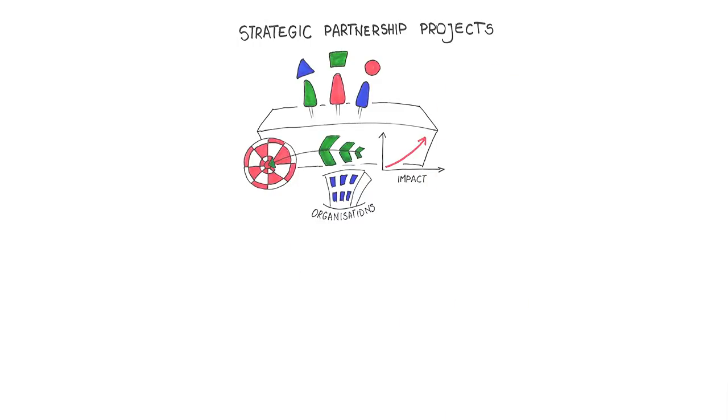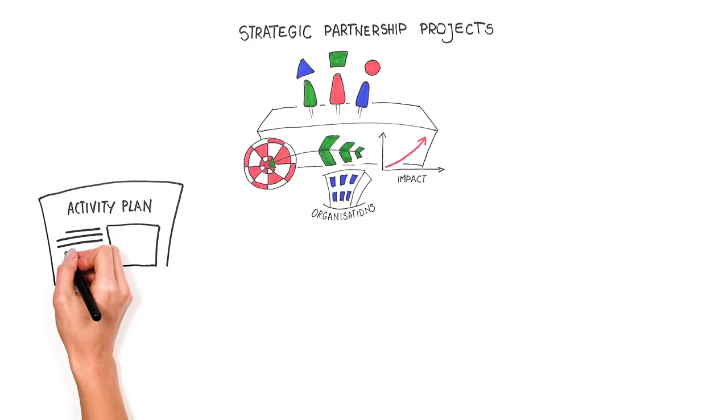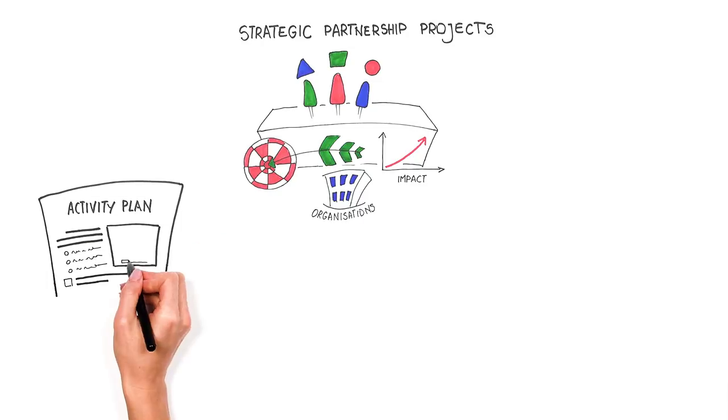When you design a strategic partnership activity plan, it is important to ensure coherence between your aim and objectives and the activities you conduct. The activity plan should have a balance in the type of activities, when and where they take place.